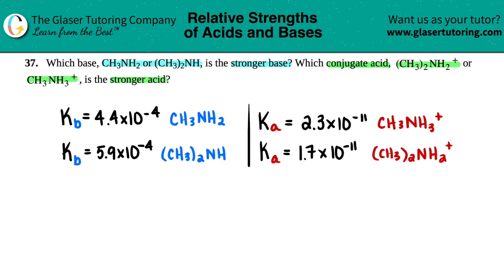So we have a KB value, an ionization constant for the base, of 4.4 times 10 to the negative fourth for CH3NH2, and then 5.9 times 10 to the negative fourth for (CH3)2NH. If you have the KB values, it's very simple. You just compare the two.